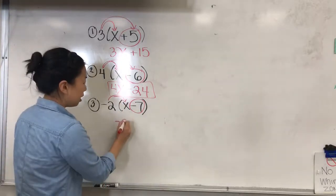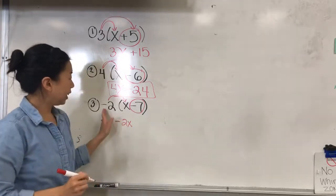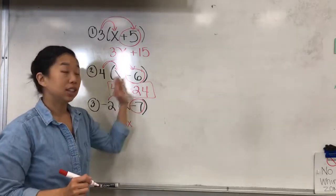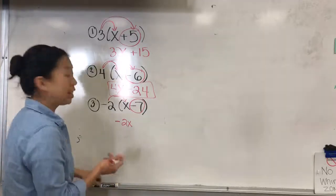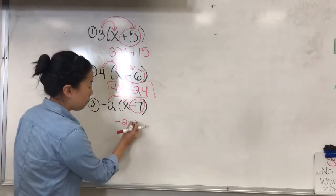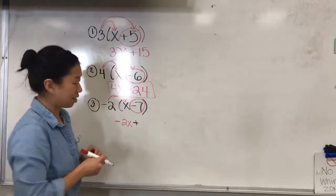And here I have a negative 2 distributing to a negative 7. So a negative times a negative is going to be a positive. So here I'm going to have a plus 14.